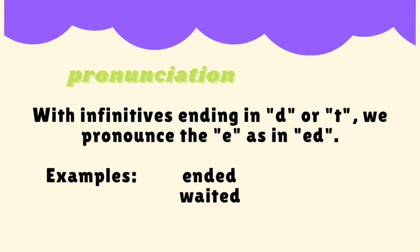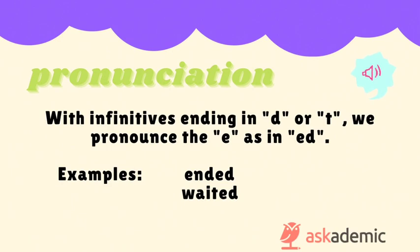With infinitives ending in d or t, we pronounce the e, as in "-ed" — for example, ended and waited.